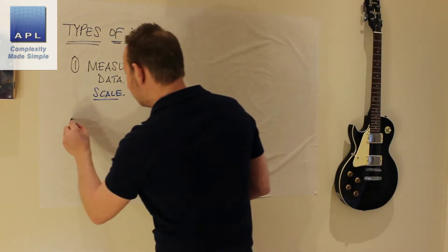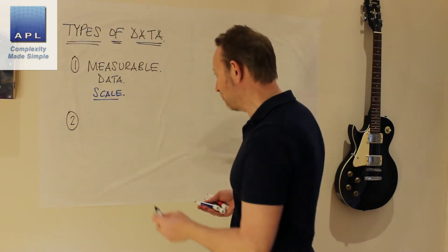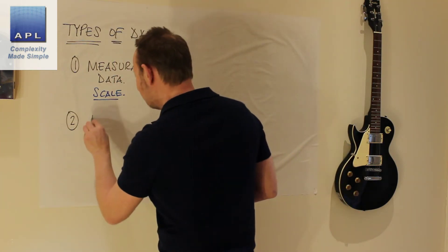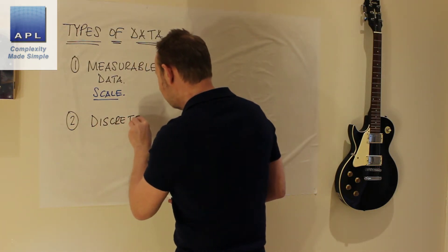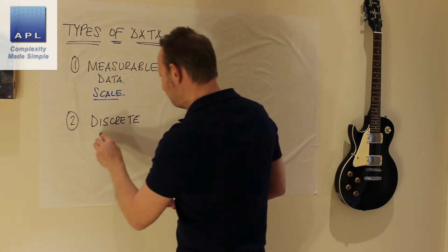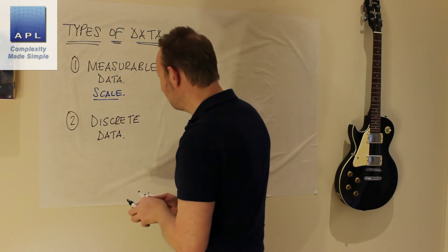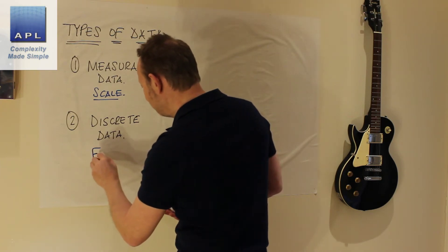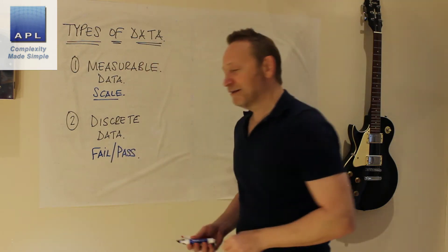The other type of data, and this is the type of data we tend to love to use by the way, is known as discrete data. Discrete data typically appears when we look at the problem as pass and fail.